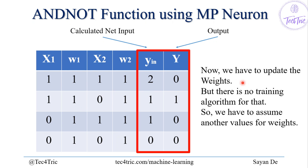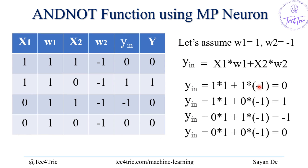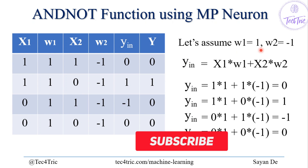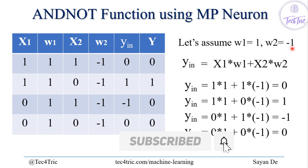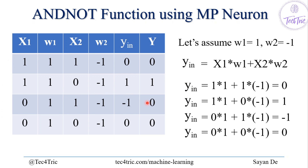There is no training algorithm for that, so we have to assume new weight values. Let's assume w1 is 1 and w2 is minus 1. Recalculating: for x1=1, x2=1 it will be 0; for x1=1, x2=0 it will be 1; for x1=0, x2=1 it will be minus 1; and for x1=0, x2=0 it will be 0. Since minus 1 is not going to fire, only the (1,0) case fires.